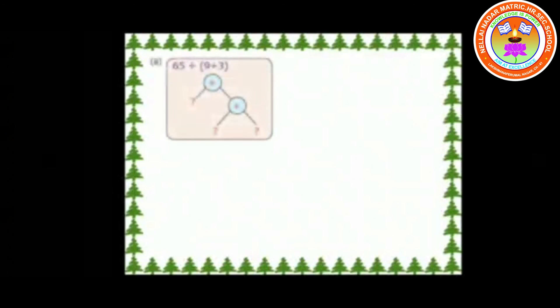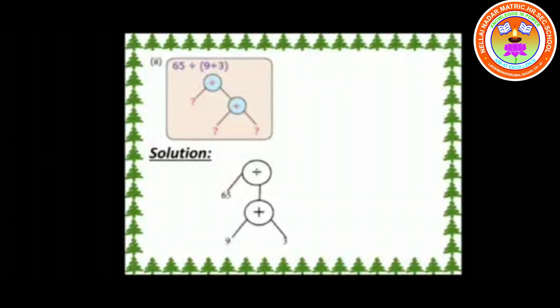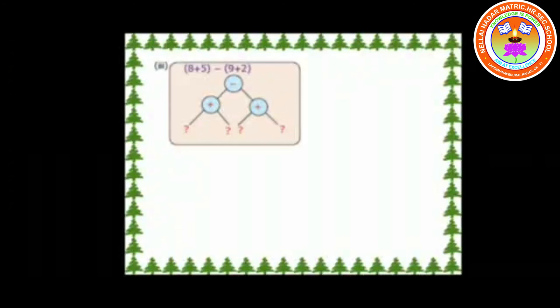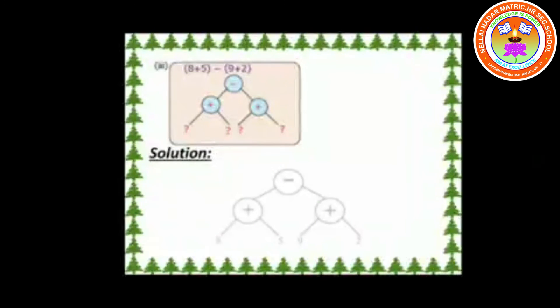Second one: in a similar way, the values are 65, 9, and 3. Third one: in the given picture, the branch on the left side is plus, whose leaves are 8 and 5. On the right side, it is also plus, and its leaves are 9 and 2.